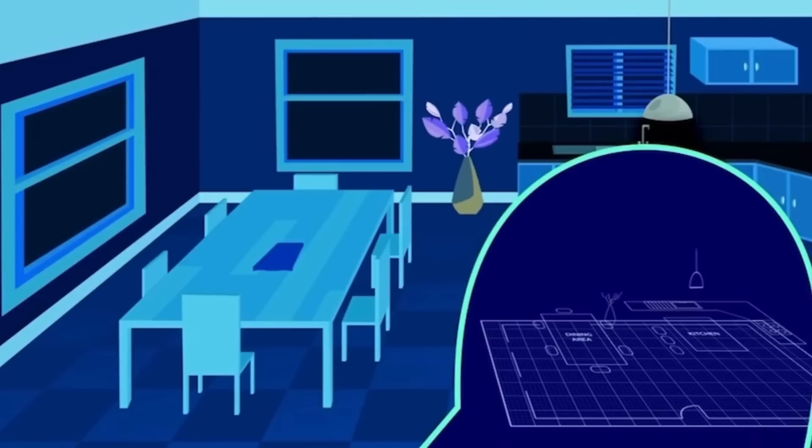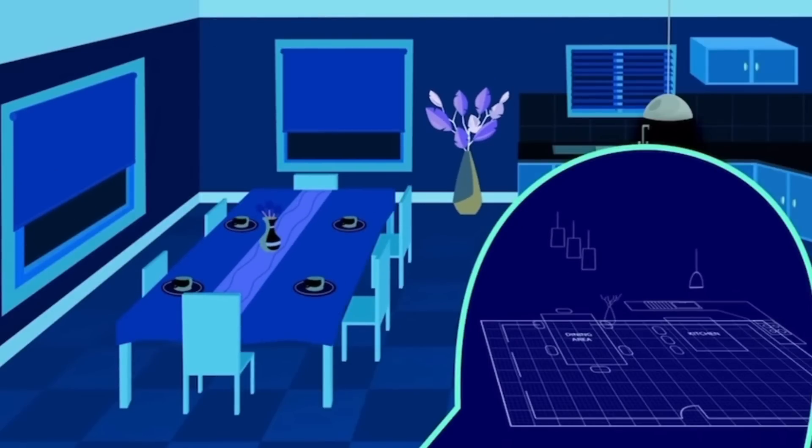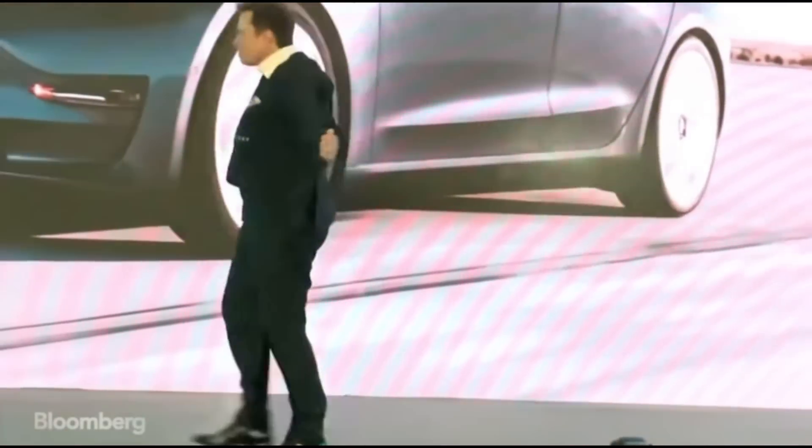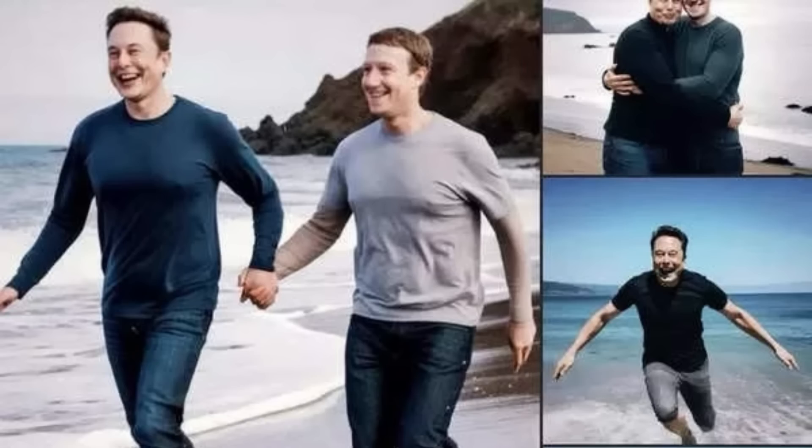We're also able to learn concepts by assigning reference frames to previously learned frames. We can know what Elon and Mark look like and, without seeing them together, create a rendering in our minds.